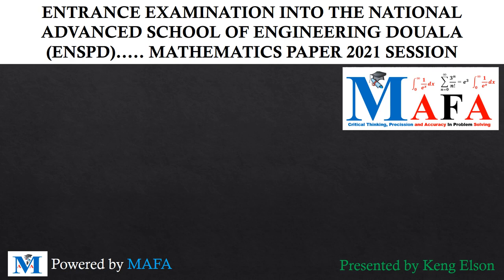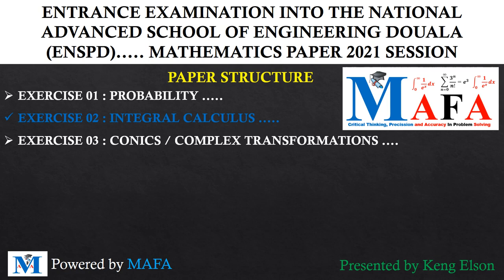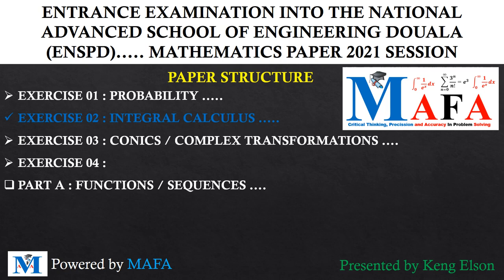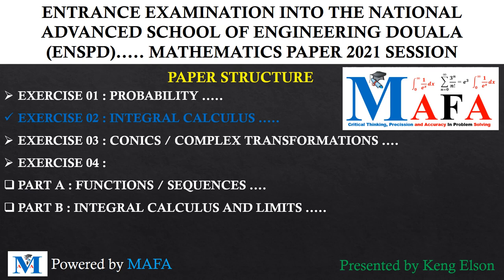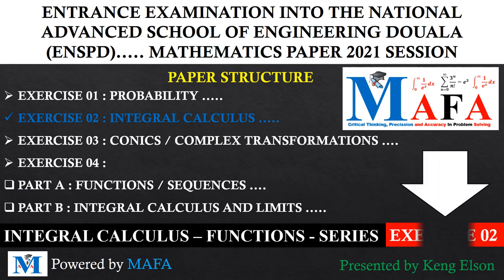We are going to be solving a particular exercise in that examination paper because it caused a lot of problems, based on the percentage of students who voted for me to solve it. The paper was structured into four different exercises: the first on probability, the second on integral calculus, the third on conics and complex transformations, and the fourth divided into two parts — functions and sequences, and integral calculus with limits.